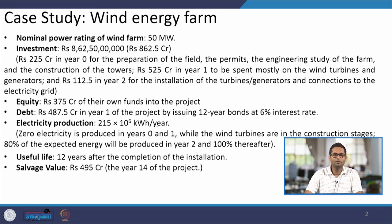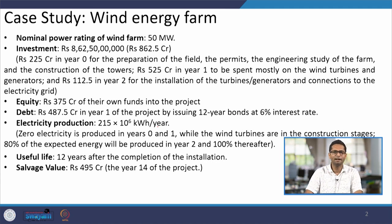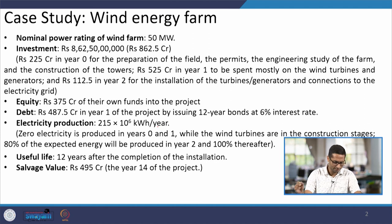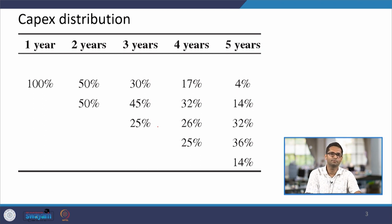The useful life of the project is 12 years. At the end of year 14, when the corporate has disposed of the plant, it can sell it to another entity, and the salvage value is assumed to be around 495 crores. This depends on predictions by managers and the engineering team regarding plant condition.